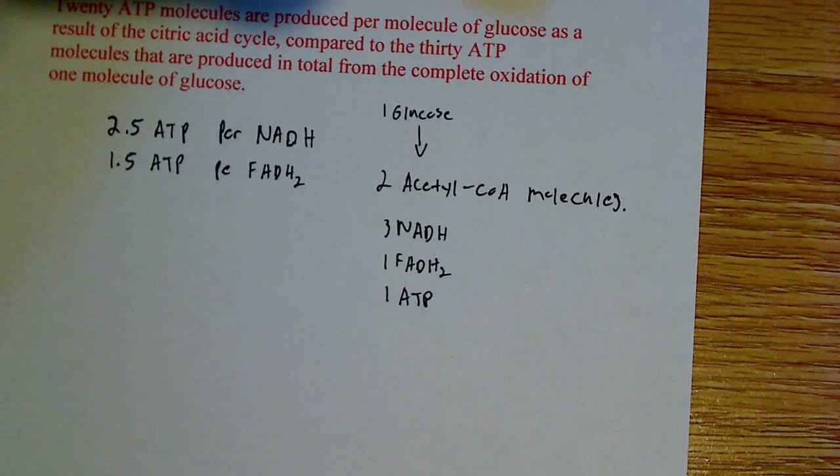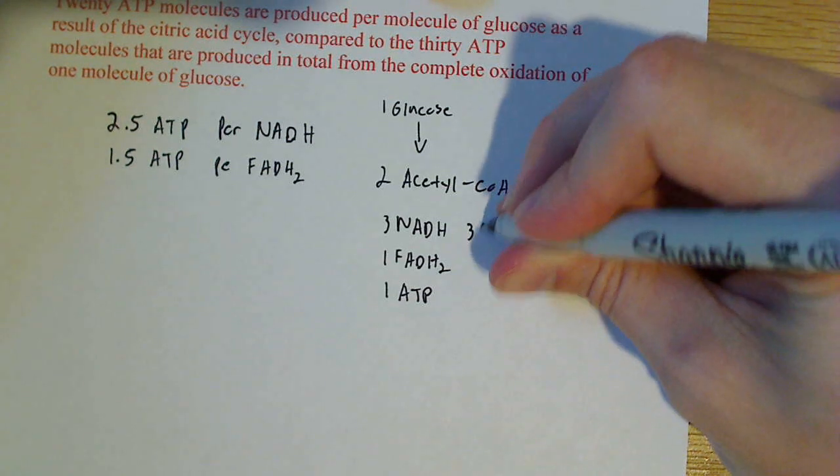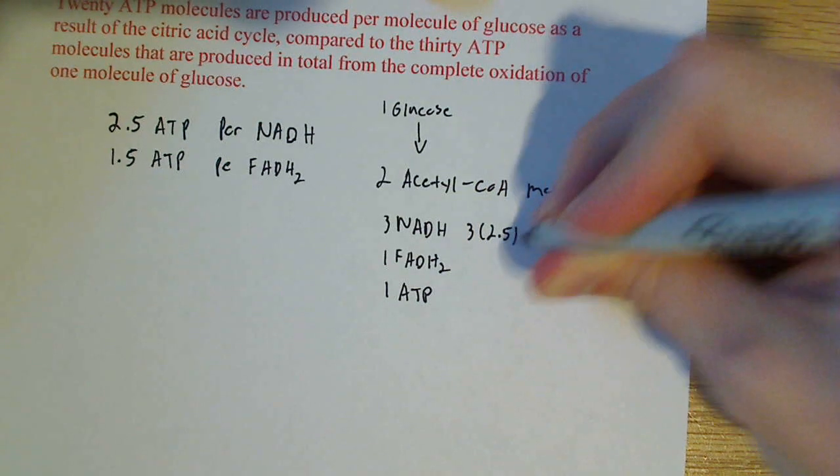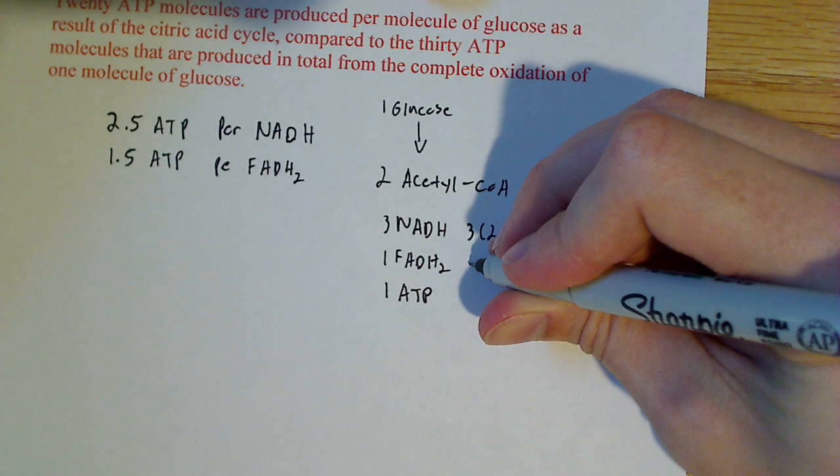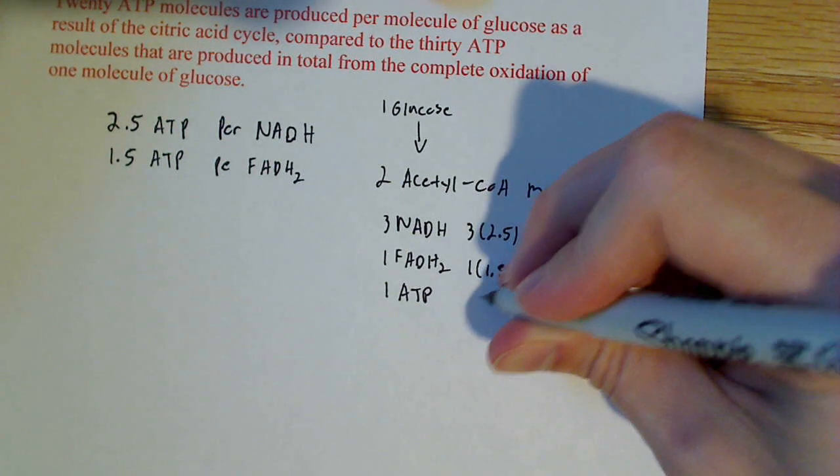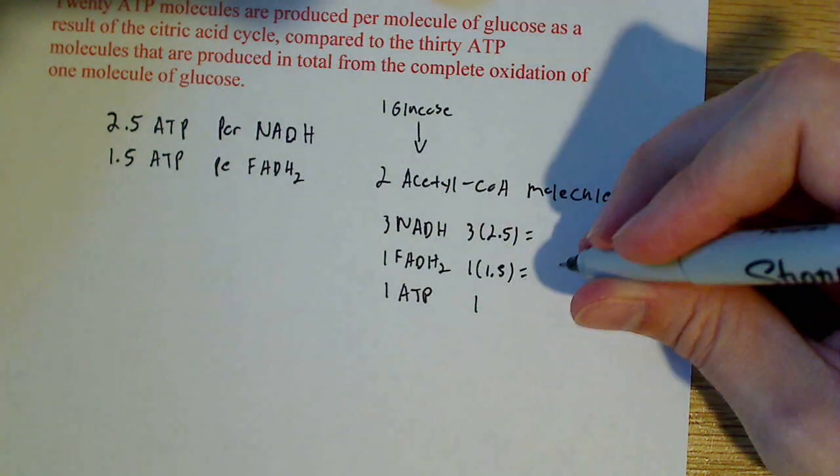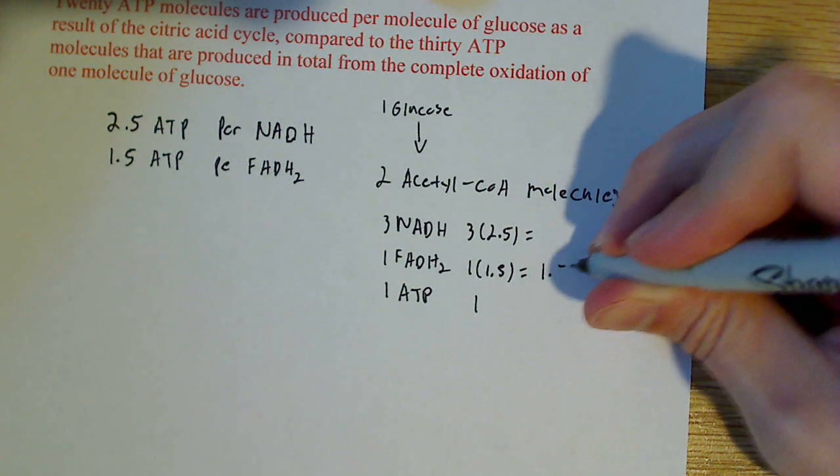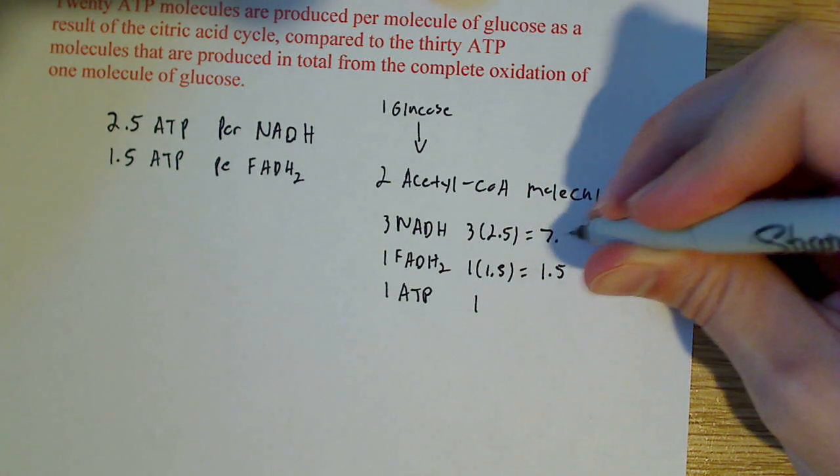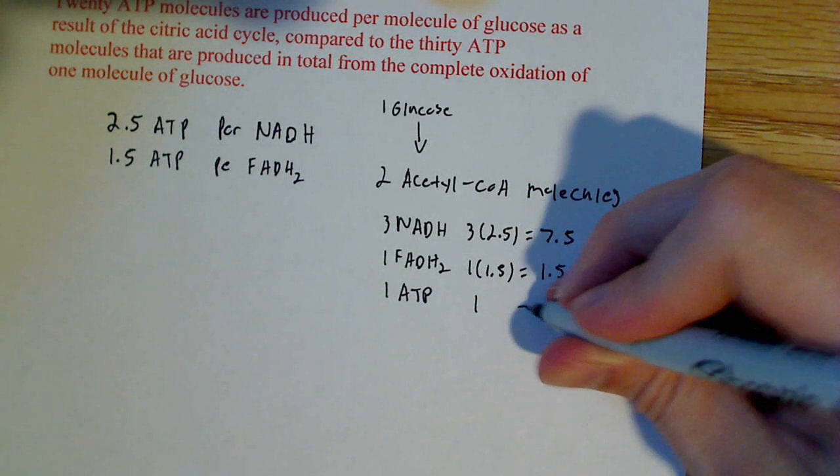So basically, what you could do to calculate this is you can say, okay, I have 3 NADH, so 3 times 2.5, and then I have 1 times 1.5, and I have just 1 here. So this right here equals 1.5, this equals 7.5, and this equals 1.